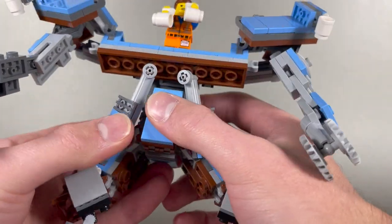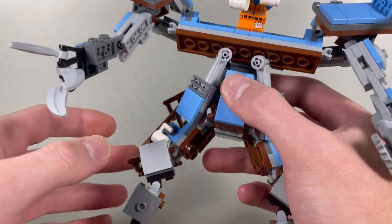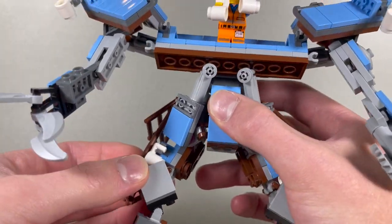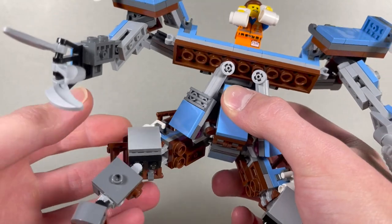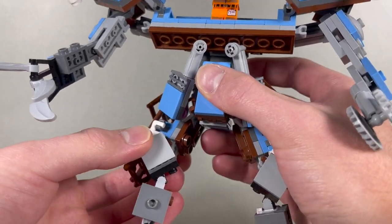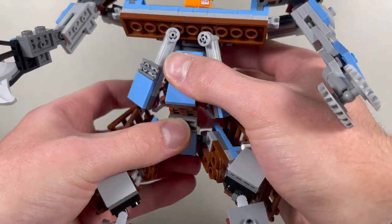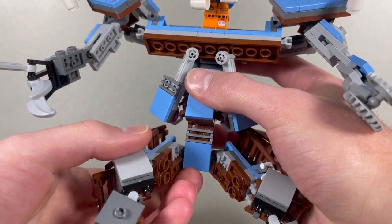No waist articulation due to how the transformation works, which I think is okay. But that means that the hips are a little bit limited as well. They can go out and do the full split, so that's nice. But forward, they can't really do that much. A way to compensate for that, however, is you can move this piece forward and then they can kick way up. So that's pretty nice.